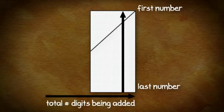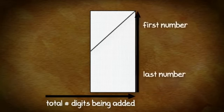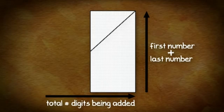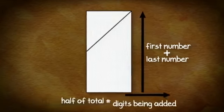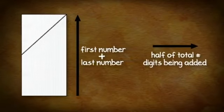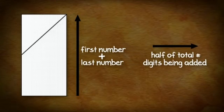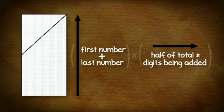The height of the rectangle is the sum of the first and last number. The width of the rectangle is the total number of digits being added, divided in half. These two quantities define the edges of our rectangle. To find the area of the rectangle, we simply multiply the height by the width.